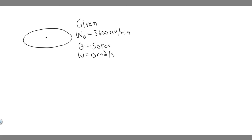In this problem, we're told a centrifuge in a medical laboratory rotates at an angular velocity of 3,600 revolutions per minute. When switched off, it rotates through 50 revolutions before coming to rest. Find the constant angular acceleration in radians per second squared of the centrifuge.